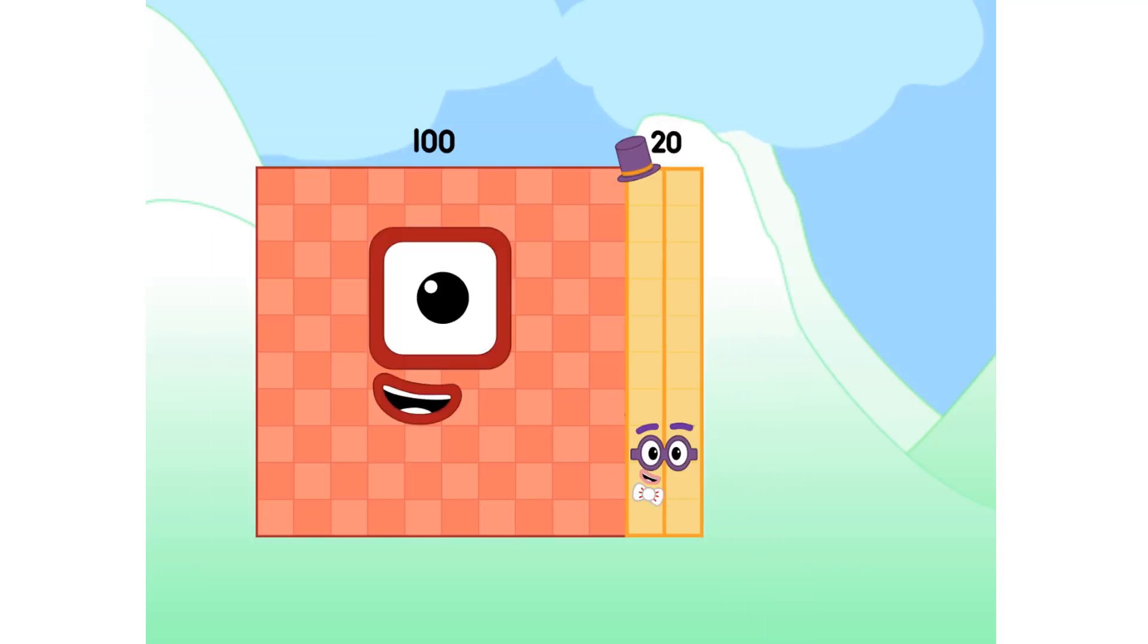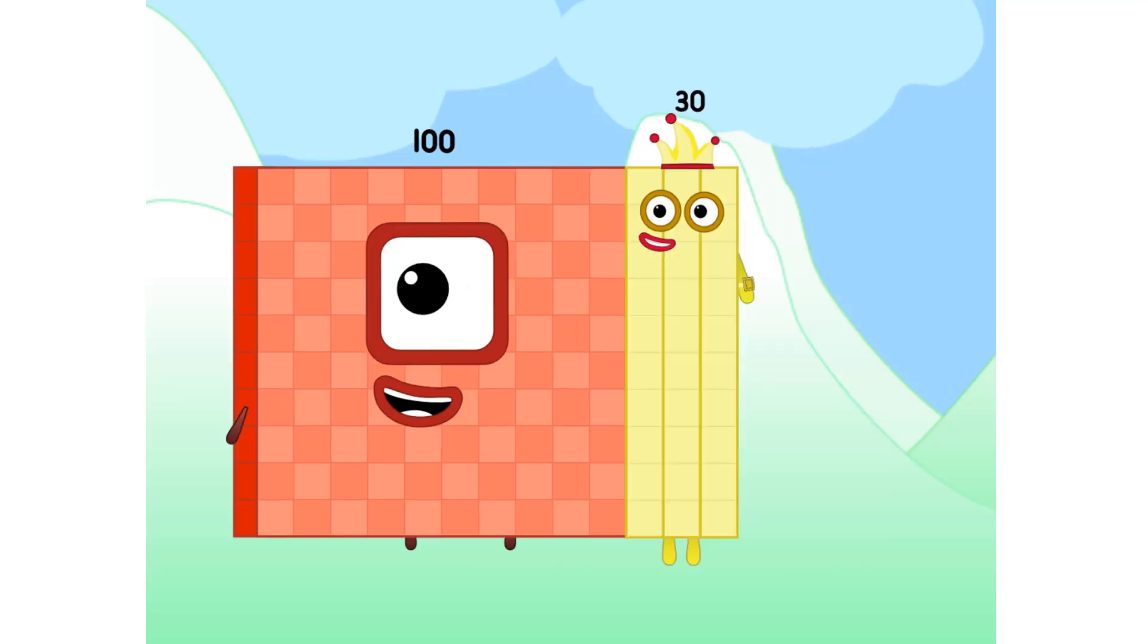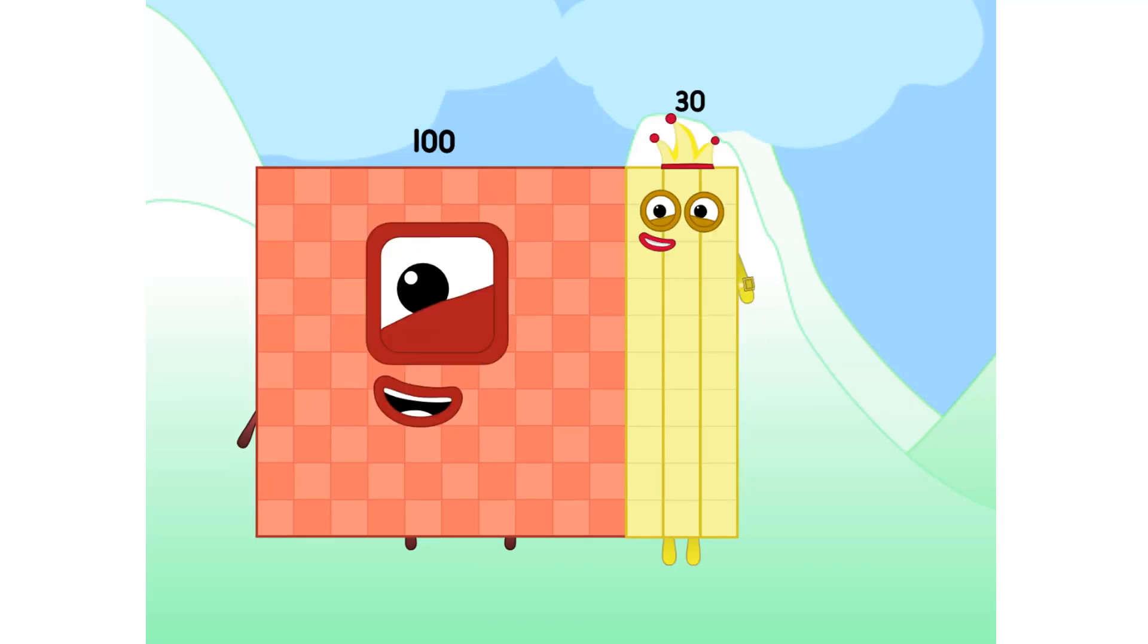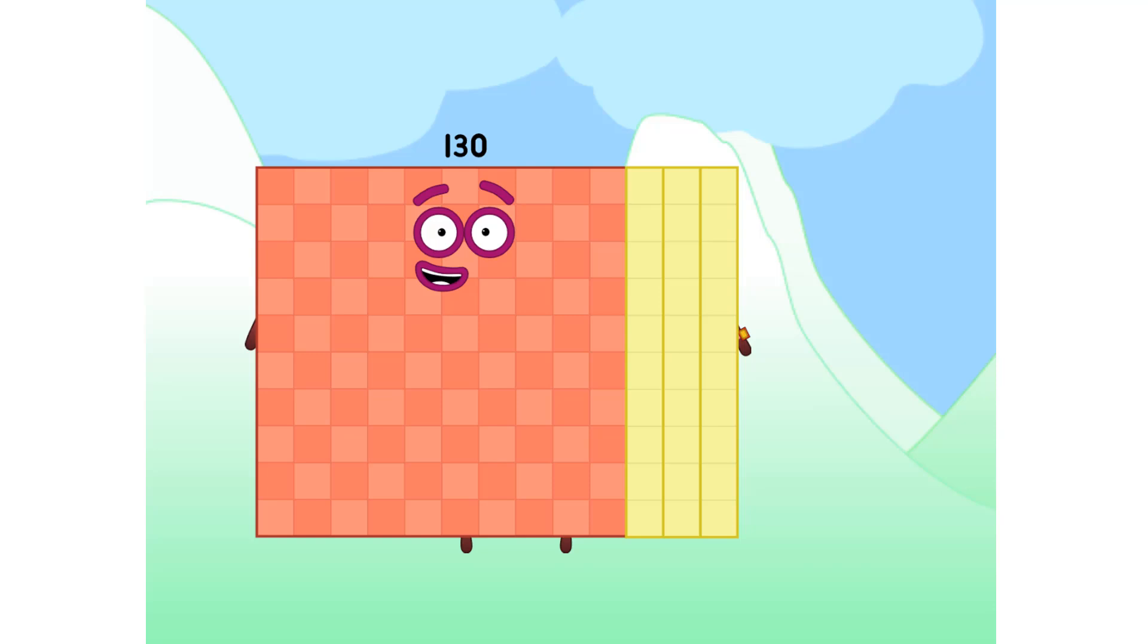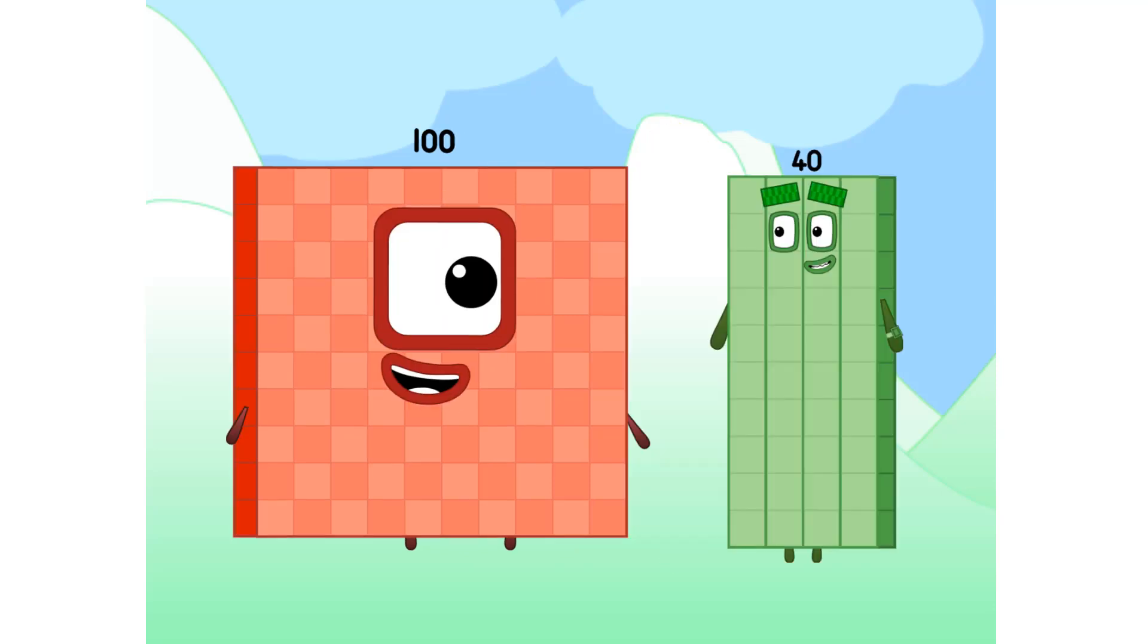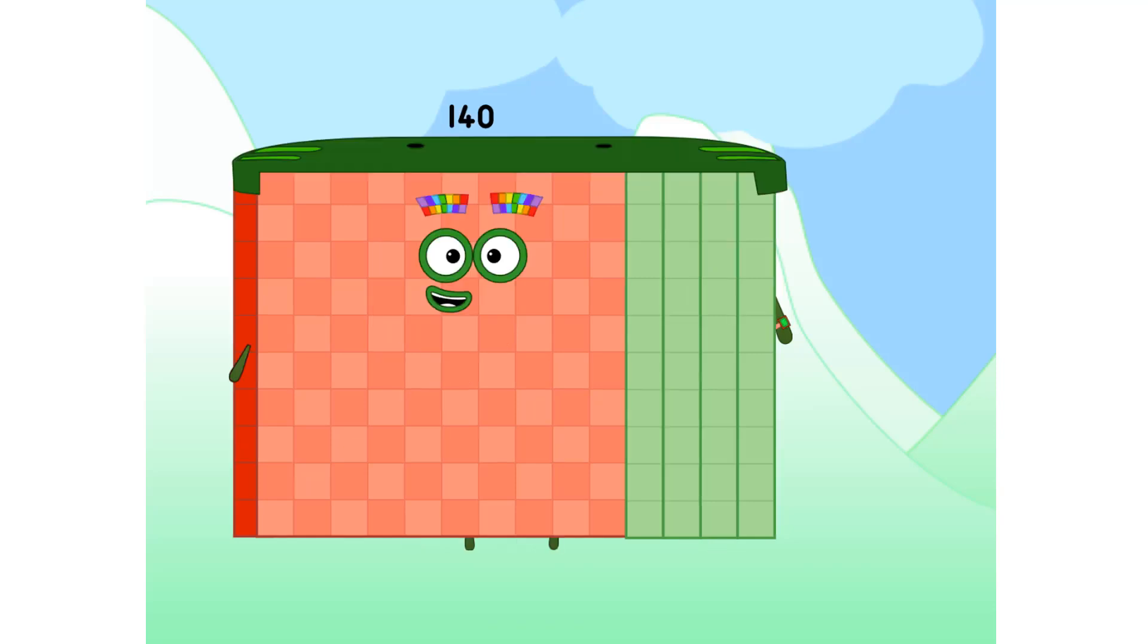It's your turn, 20. Put us together and what have you got? 120. I am 120. I am a super rectangle. I'm 100 and 20. Let's go, 30. Put us together and what have you got?